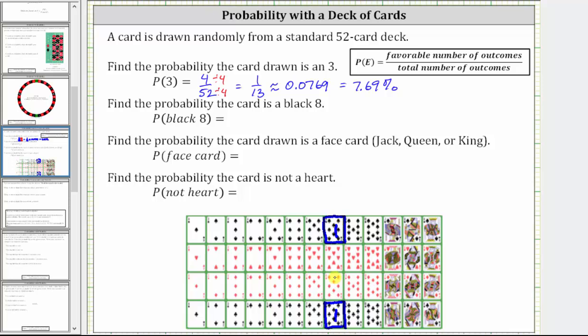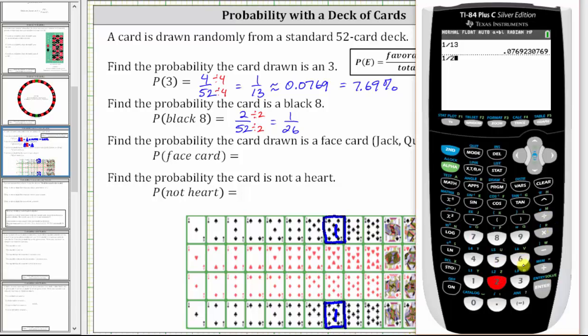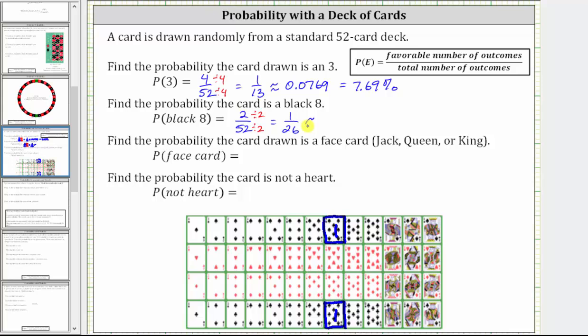So there are a total of 2 favorable outcomes out of 52 total outcomes. The probability is 2 divided by 52, or 2/52. Simplifying by dividing numerator and denominator by 2 gives us 1/26. Let's also show the decimal and percentage: 1 divided by 26 to four decimal places is 0.0385, which is 3.85%.